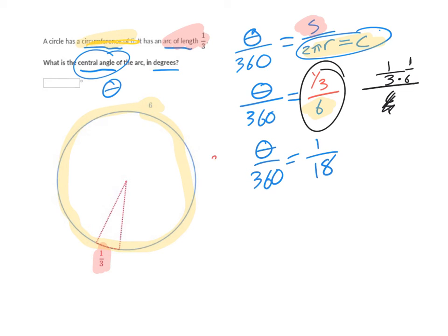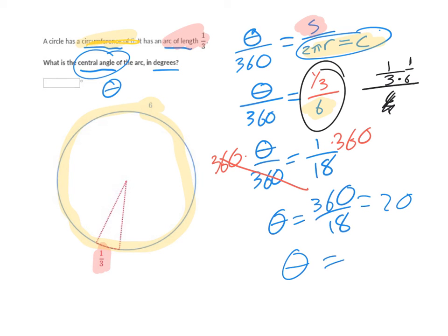Now if you just were to multiply both sides by 360, you'd get that theta equals 360 over 18. And 360 over 18 is 20. So that means the central angle is 20 degrees.